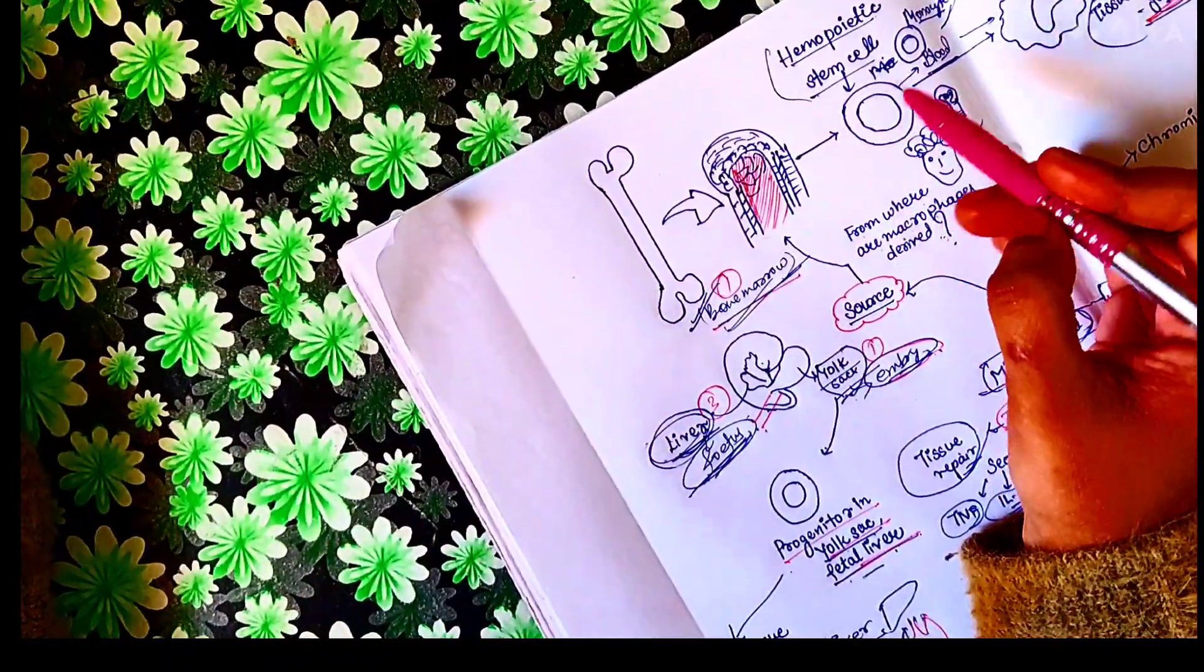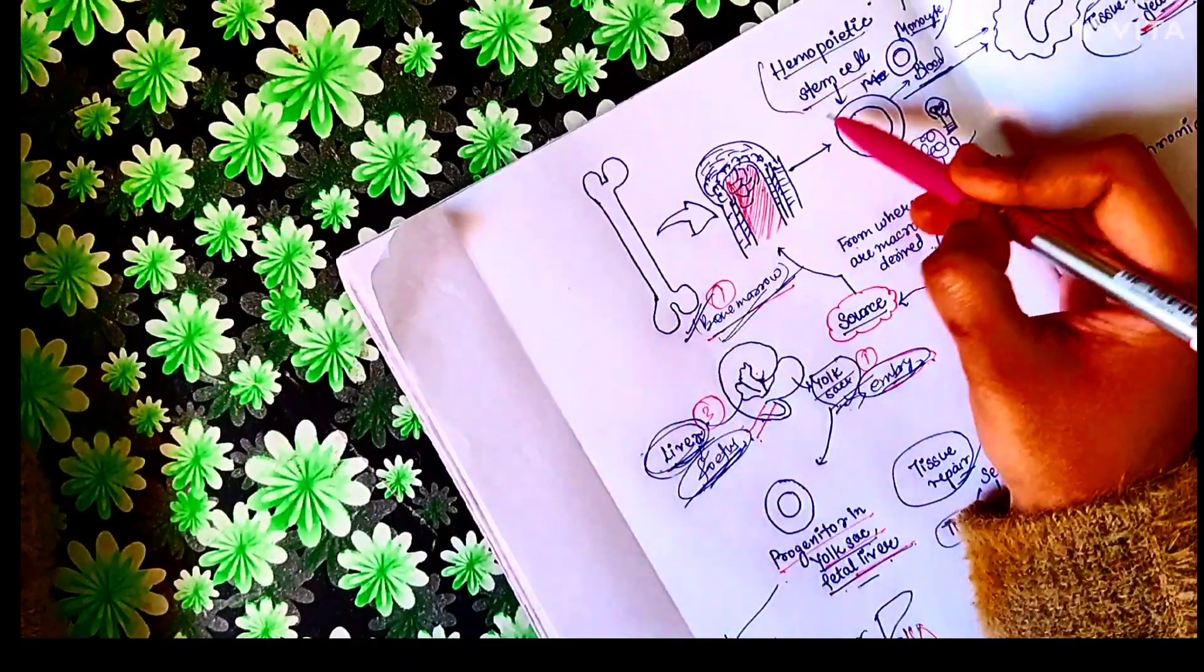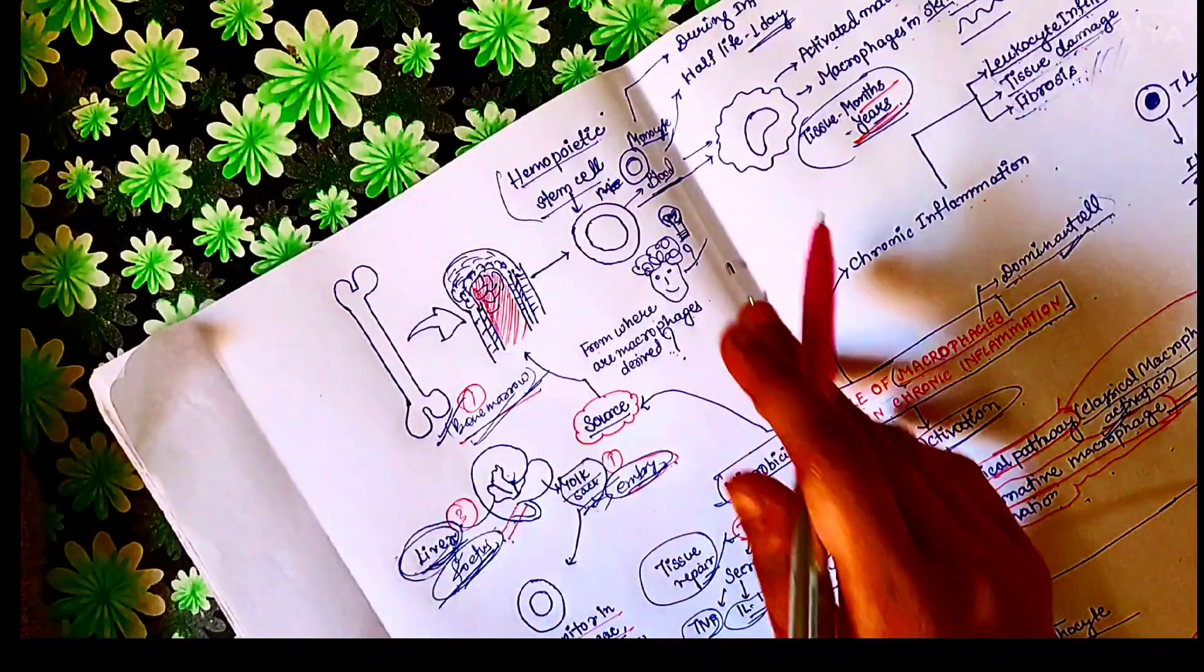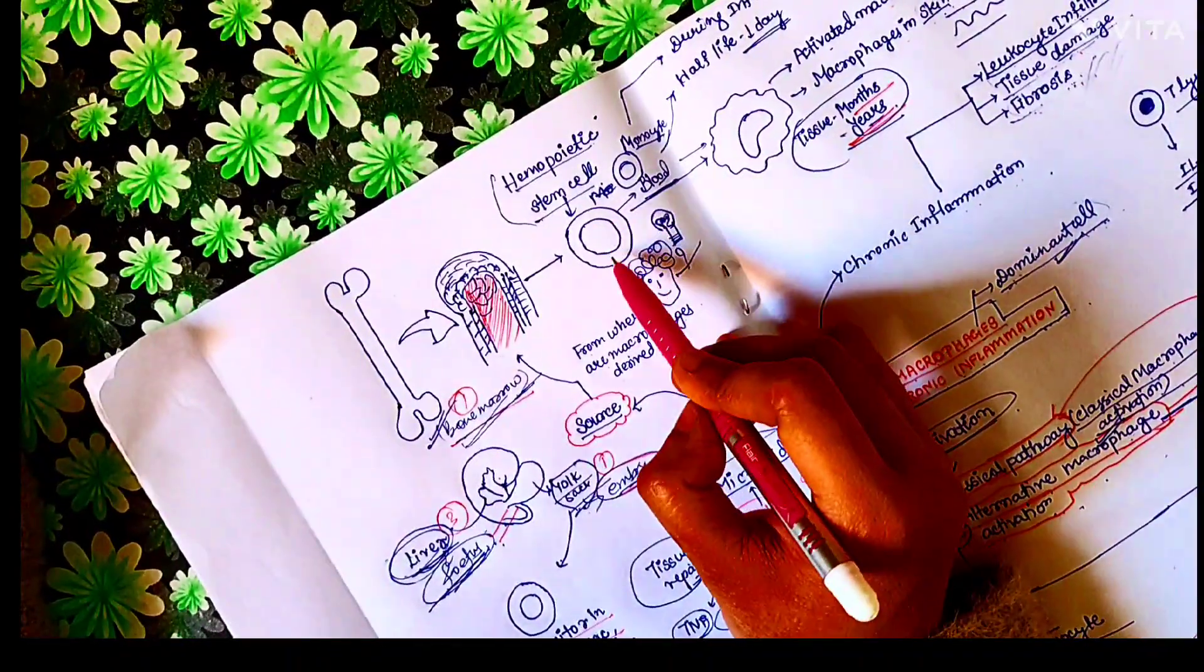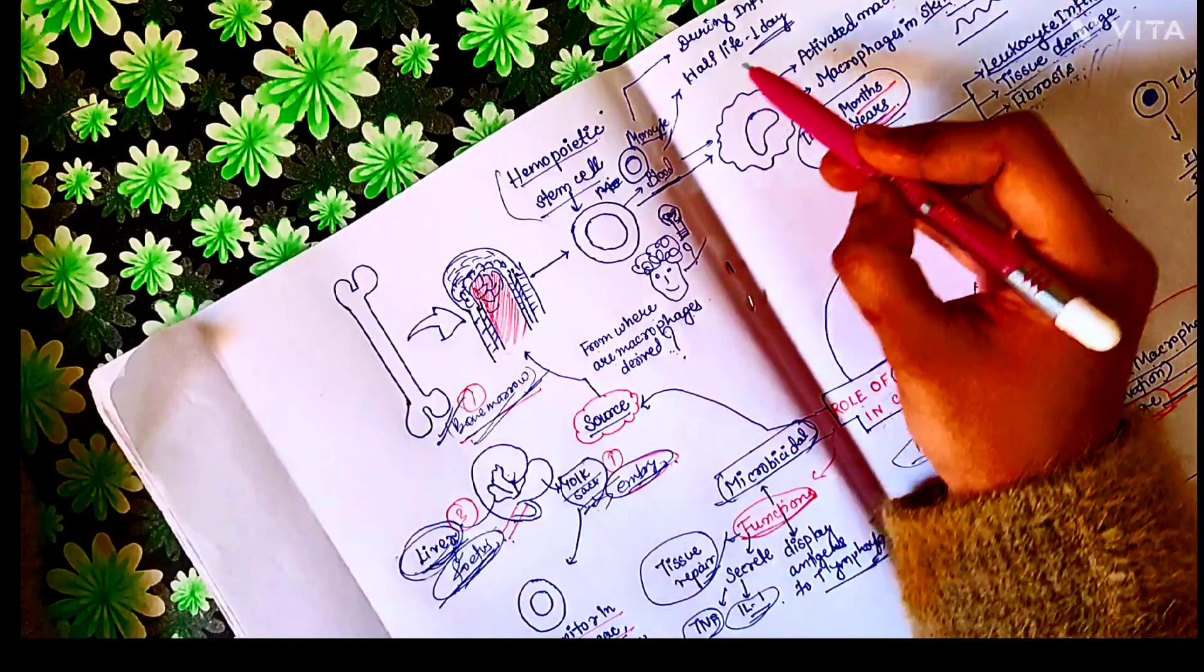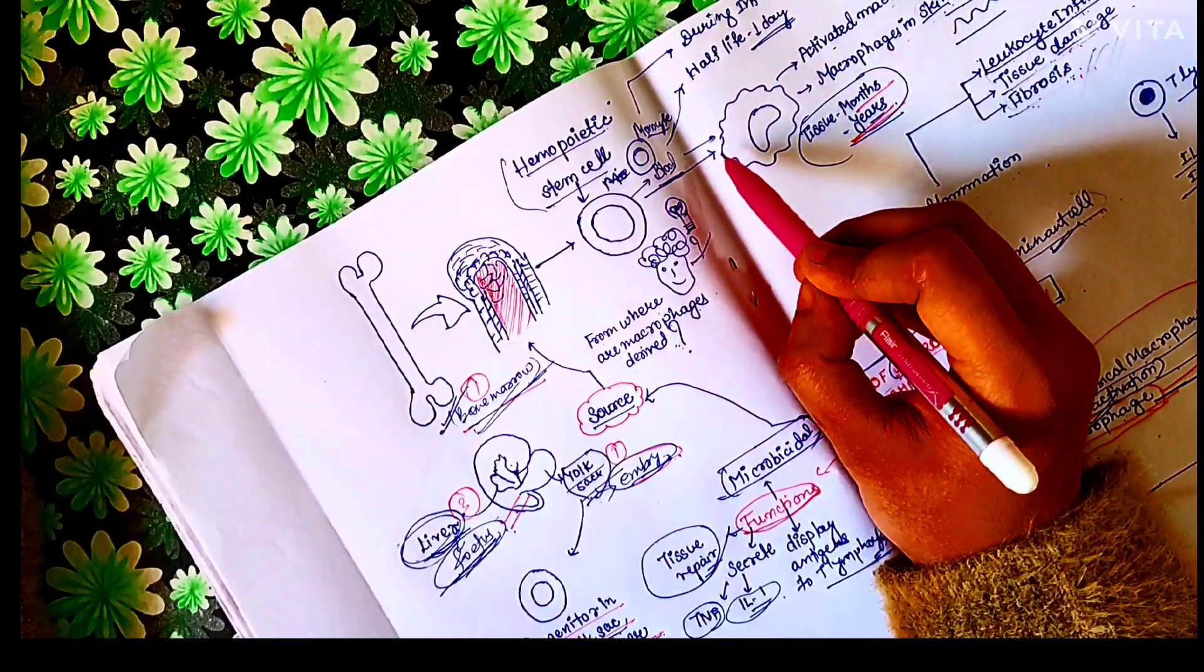In bone marrow, there are progenitor cells called hemopoietic stem cells which give rise to monocytes. So monocytes arise in bone marrow. From there, they reach the blood where their half-life is one day. When they reach the tissue, they are called macrophages where they reside for months to years.